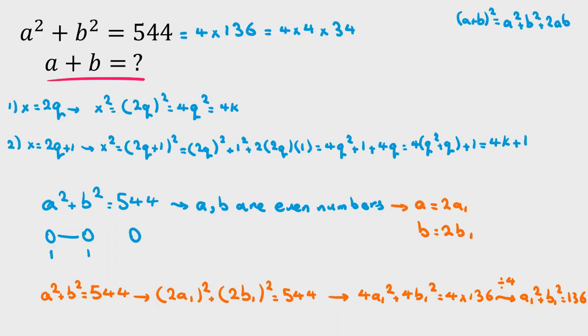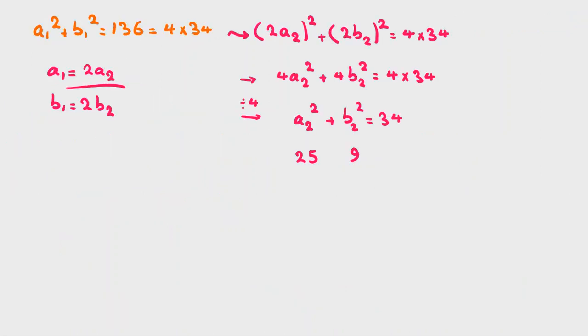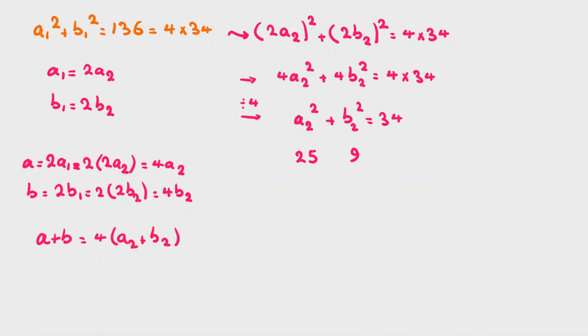Now, problem says a plus b is what? a is 2a1, b is 2b1, and a1 is 2a2, b1 is 2b2. So you can say a is 2a1, and a1 is 2a2. So it will be 4a2. And b is 2b1, b1 is 2b2. It will be 4b2. So it means that 4 times a2 plus b2. a2 can be plus, it is not important to switch 9, 25 or 25, 9, because we want to find sum of them.